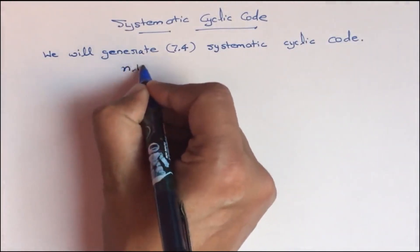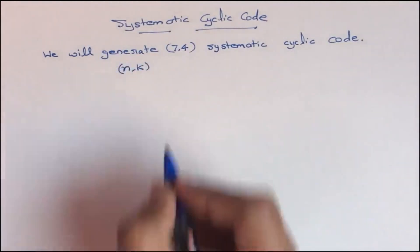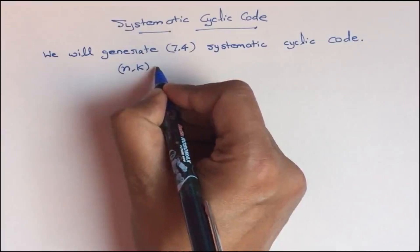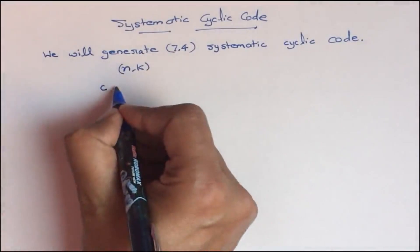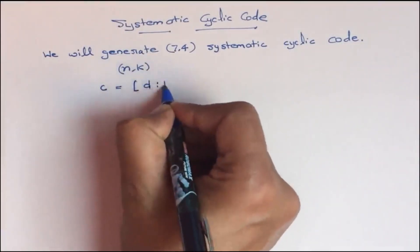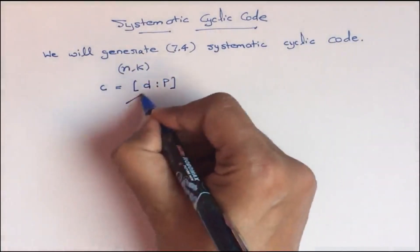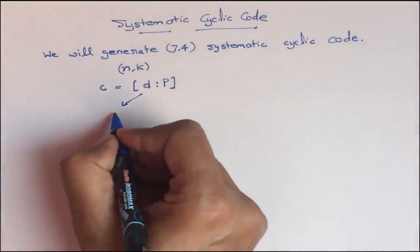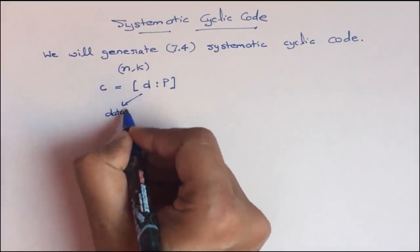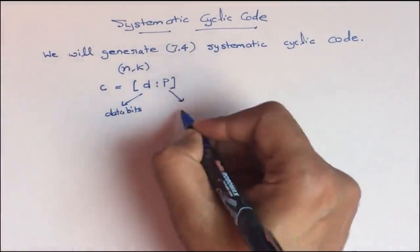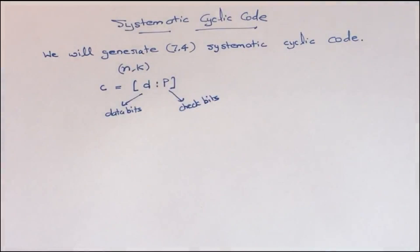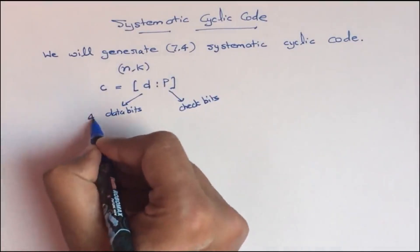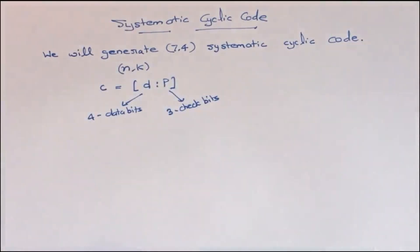Generally, we have to generate an (n,k) type systematic cyclic code. If c is our code, it has a structure in which the first k digits are data word or data bits, and the next are check bits. For example, if we are generating a (7,4) systematic cyclic code, then four data bits will be there and three check bits will be there.